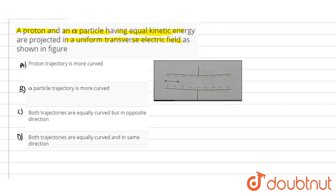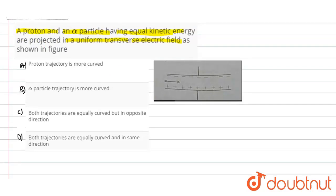proton and an alpha particle having equal kinetic energy, because they are projected into a uniform transverse electric field. So here we have negative charges and positive charges. According to the given question,